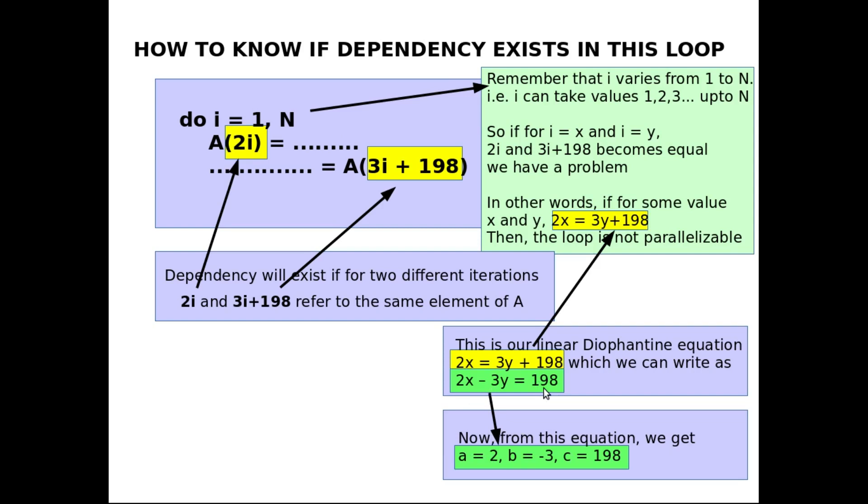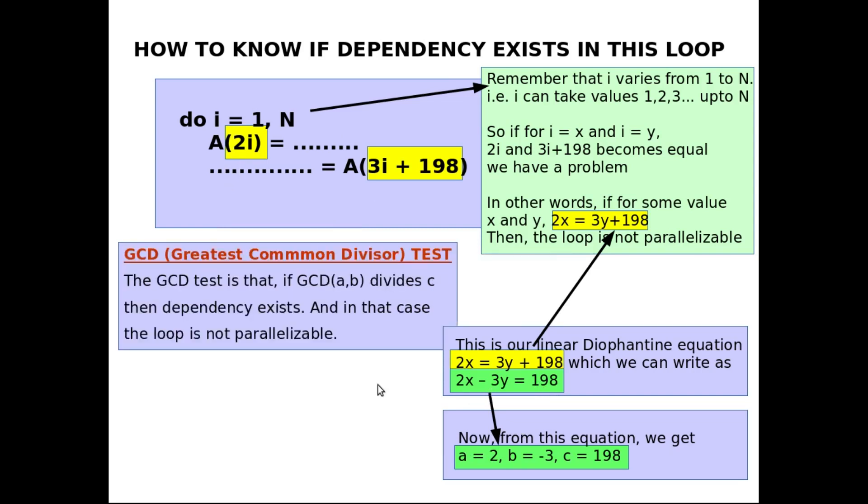So now what is GCD test? GCD test tells us that if GCD of a and b, whatever is the GCD of a and b, if that value divides c, then we can say that dependency exists and hence the loop will not be parallelizable.